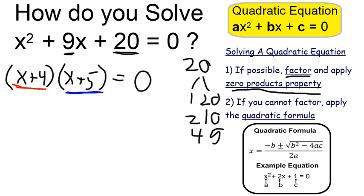The first, x plus 4 is 0, when x is negative 4, because negative 4 plus 4 is 0. And likewise, the second option is negative 5.